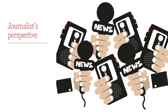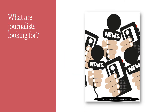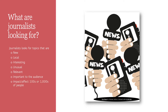You've got to think about this from a journalist's perspective. Journalists are looking for topics that are new, local, interesting, unusual, relevant to the audience, and important because they have an impact on people. These are all news values we discussed earlier in the semester, and that's what you want to focus on and think about when you write your story.